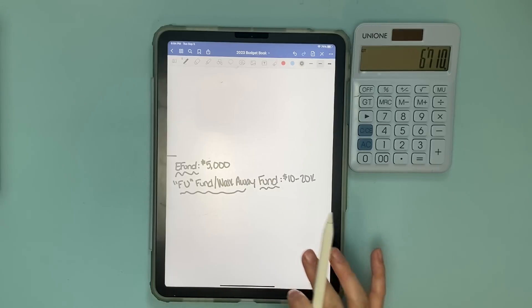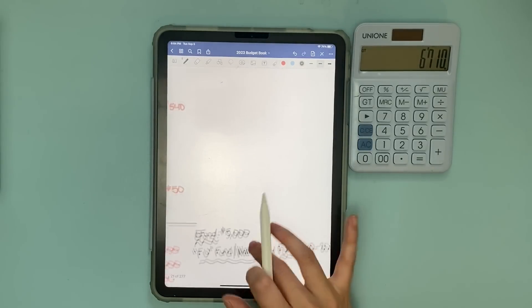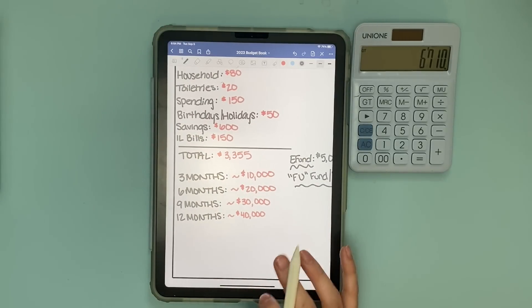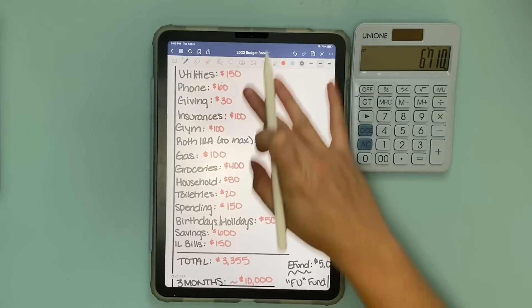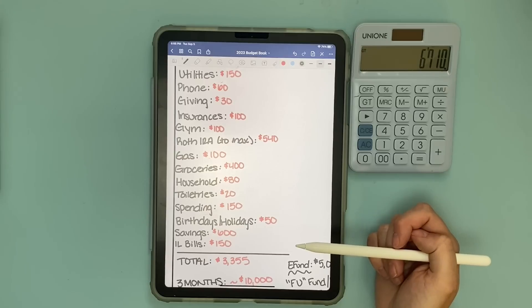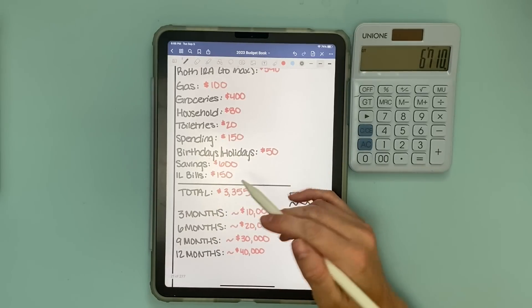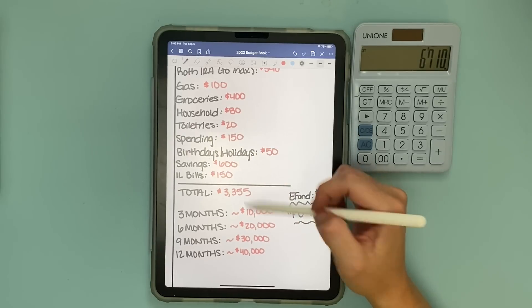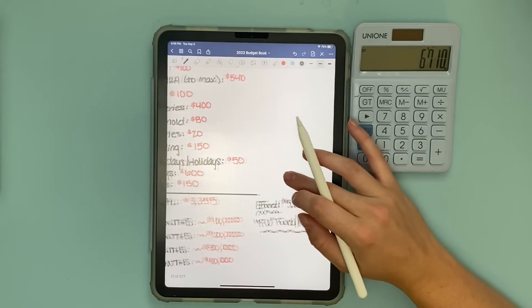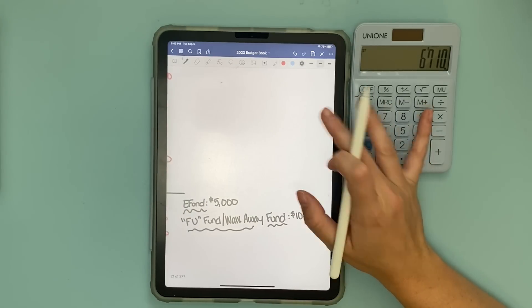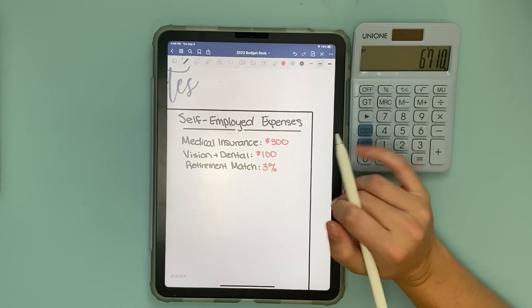For me I want that to be this three to six months and they also some people recommend going as far as 12 months and I just don't feel like I need that because within three months I could easily find a full-time job working for someone else if I needed to. So three to six months feels very appropriate to me. I would say my walk away fund should be 10 to 20k. This is really just to set me up to feel comfortable leaving a full-time job working for someone else to be able to work for myself.